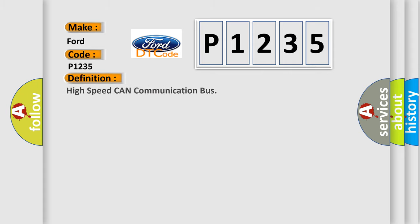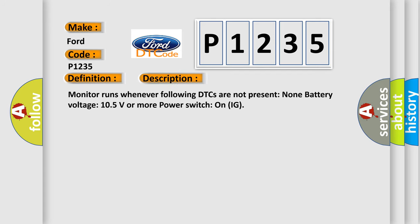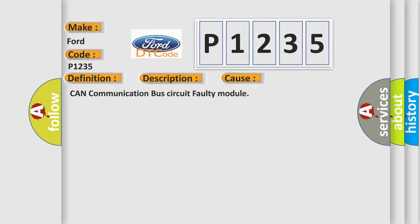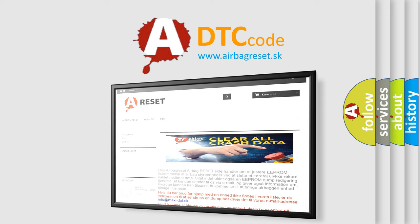The basic definition is High-speed CAN communication bus. This is a short description of this DTC code: Monitor runs whenever the following DTCs are not present — None. Battery voltage: 10.5 volts or more. Power switch on IG. This diagnostic error occurs most often in these cases: CAN communication bus circuit faulty module. The Airbag Reset website aims to provide information in 52 languages. Thank you for your attention and stay tuned for the next video.